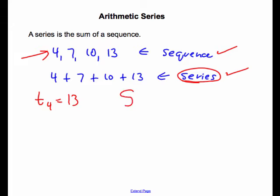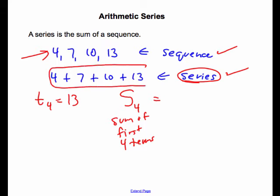Now we're going to talk about S4, which is going to be the sum of the first four terms in this case. So if I were to add up what all these terms are, I think that works out to be 11, 21, so 34. The sum of the first four terms is 34.